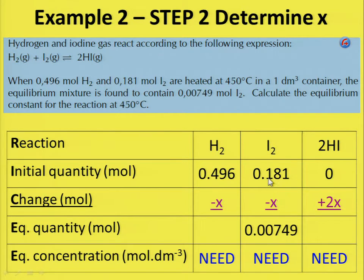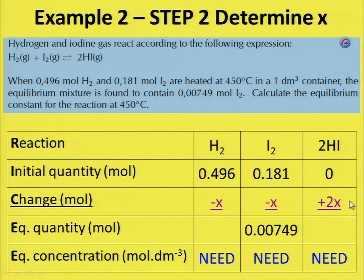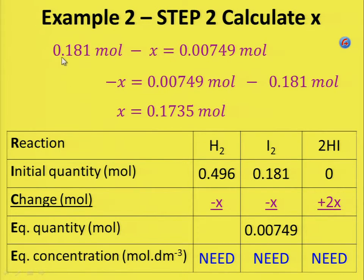Since the ratio is 1 to 1, the initial value minus x gives you the value at equilibrium for iodine, and the same for hydrogen. In the beginning there are no product molecules, so 0 plus 2x gives you the amount of HI at equilibrium. Now solve for x: 0.181 minus x equals 0.00749, which gives you x equals 0.1735 moles.